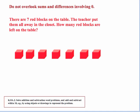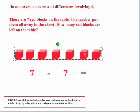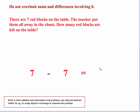Don't overlook sums and differences involving zero. It sounds simplistic, but students need practice with this. Consider this problem: there are seven red blocks on the table. The teacher put them all away in the closet. How many red blocks are left? Symbolically, all the red blocks were taken away, so the solution is zero. This is important because you're laying the foundation for the additive inverse — when you subtract something from itself, you always get zero.